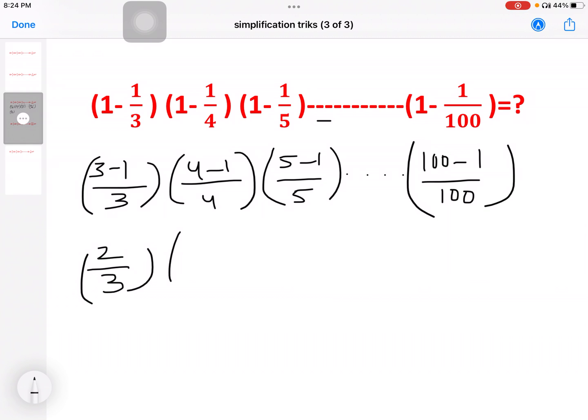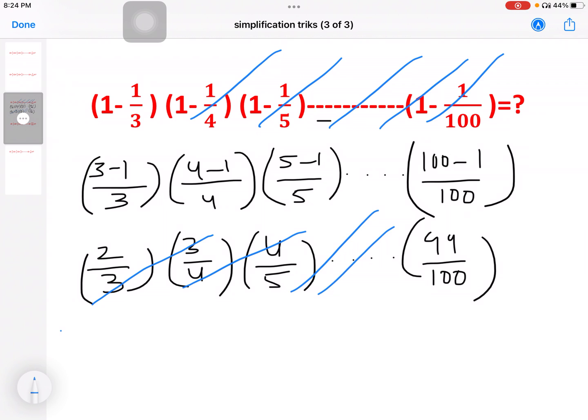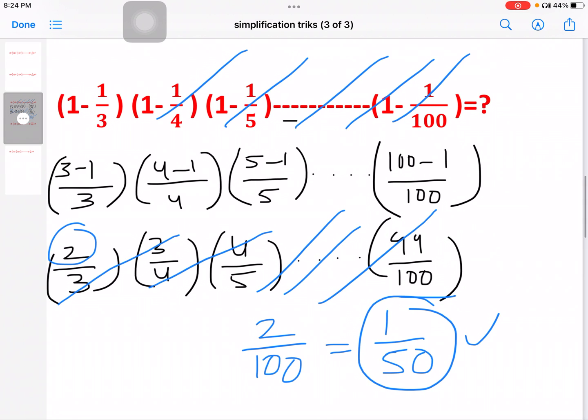What is the answer? 2 by 3, 3 by 4, 4 by 5 and so on. So here is a pattern. When you look at this pattern, it will be the idea of the pattern. If there is a pattern, it will be the same pattern. Here is the last one, it will be the same. This is the first one, here is the same 2 by 100 that equals 1 by 50. Just pattern, observe the pattern.